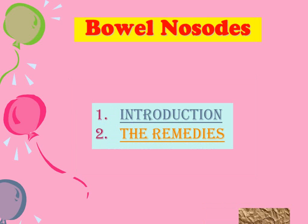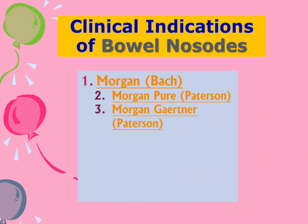Now we go to the remedies. The first is the Morgan group, which contains three remedies: Morgan Bach, Morgan Pure Patterson, and Morgan Gaertner Patterson. Bach started the work and left it; then Patterson joined. Remedies in brackets with 'Bach' means introduced by Bach, and 'Patterson' means afterwards developed by Patterson.